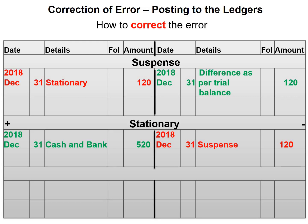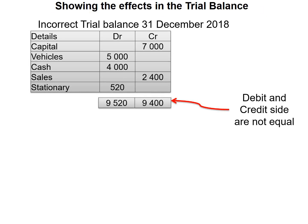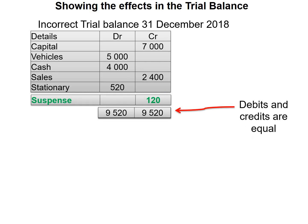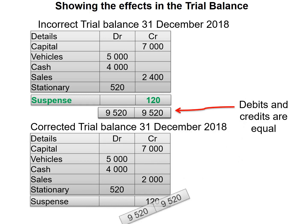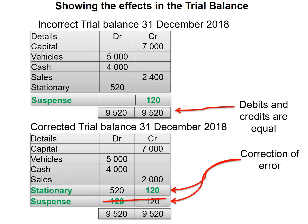Let's have a look at how this will affect our trial balance. In our incorrect trial balance, the debit and credit sides are not equal, so we enter our suspense account of 120 on the credit side so that the trial balance can balance. In our corrected trial balance, we debit the suspense account to return its balance to zero, and credit stationery with 120 to return its value to 400 on the debit side.